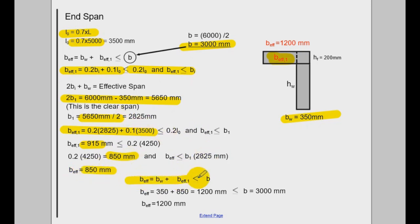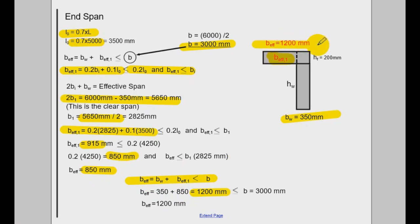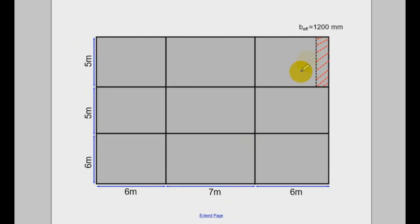We substitute b1 into the equation: 0.2 times b1 plus 0.1 times 3500. Putting the numbers in, you get 915 mm. Checking against the limit, the limit gives something smaller, so you go for the limit. Going back to the original equation, you have 350 as the BW plus b_effective_1, and you get 1200 mm. That's our effective flange breadth. You have to check it against b — that value is quite large, so you take the b_effective of 1200 mm. If viewed on a plan view, that's our L-beam and its flange breadth.